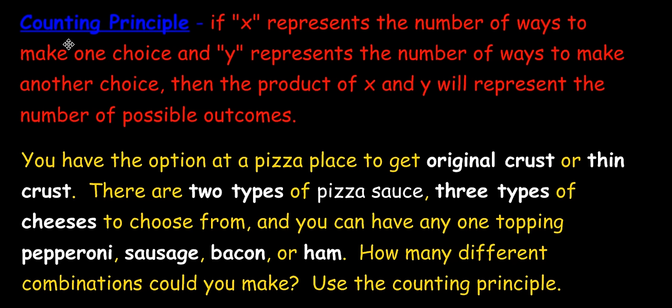And moving on. Next we learn about something called the counting principle. If x represents the number of ways to make one choice and y represents the number of ways to make another choice, then the product of x and y will represent the number of possible outcomes.